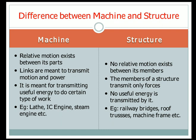Examples of machines are the lathe machine, IC engine, and steam engine. Examples of structures are railway bridges, roof trusses, and machine frames. These structures are built for the purpose of carrying loads. Thank you.